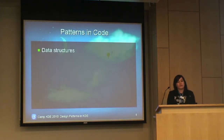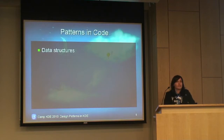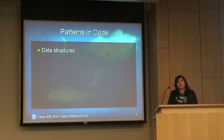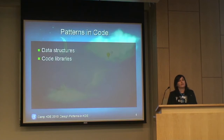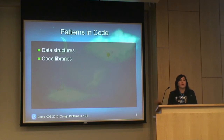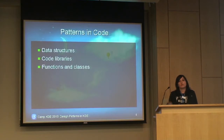Many of you are very familiar with patterns in code. Data structures — something very basic that you learn in computer science — are basically patterns for how to solve certain problems. You have patterns for sorting, for storage, for retrieval. Code libraries are collections of repeated procedures, and those procedures can be patterns. Rather than re-solving a problem each time you build new software, you use libraries and reuse those patterns. Functions and classes on a smaller level solve patterns so that you can reuse them over and over again.